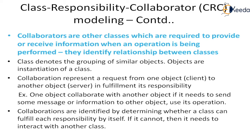Class denotes the grouping of similar objects; objects are instantiations of a class. Collaboration represents a request from one object to another object for fulfillment of its responsibility. Whenever one object tries to use another object's operation, it will send a message or information to that object. We can then say there is a collaboration between two classes. Collaborations are identified by determining whether a class can fulfill each responsibility by itself — if it cannot, then it needs to interact with another class.